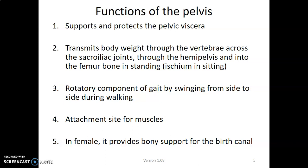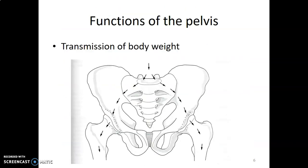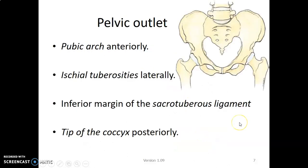The pelvis transmits weight into the femur, and its rotatory component of gait involves swinging from side to side during walking. It serves as a site for muscle attachment, and in females it provides support for the birth canal. This is how weight is transmitted from the vertebrae to the sacroiliac joints, to the acetabulum, and then to the femur.